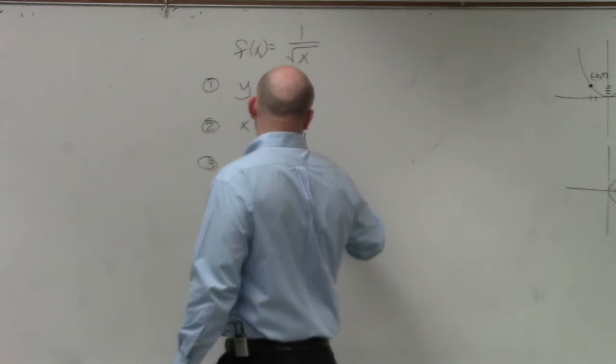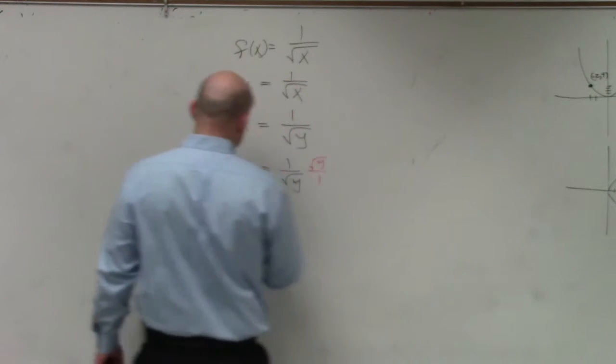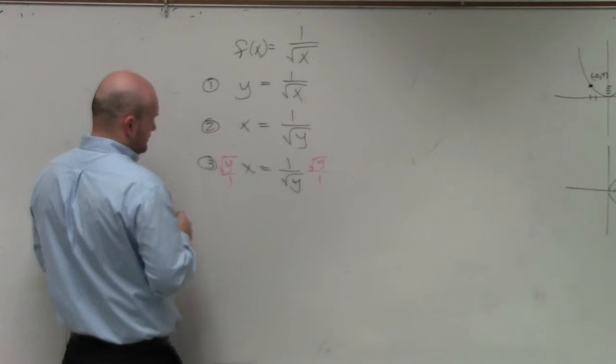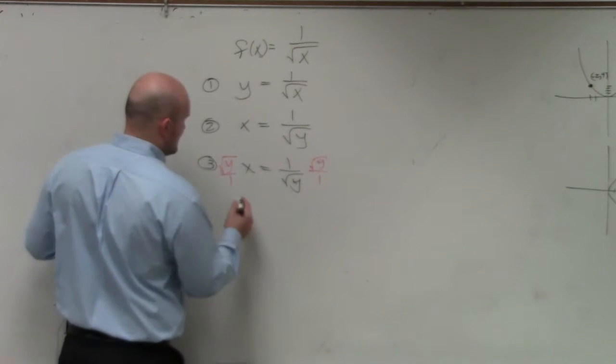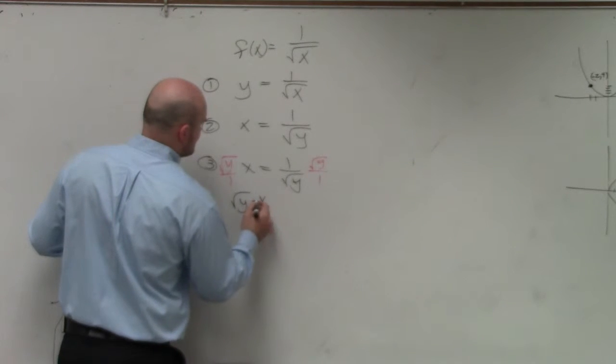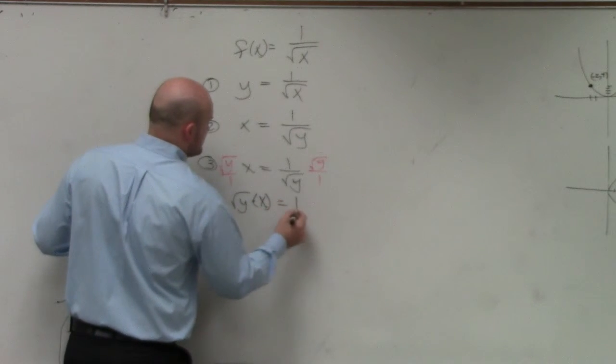I'm going to multiply by square root of y in the numerator to get rid of it on both sides. So therefore, I have the square root of y times x equals 1.